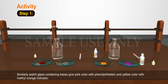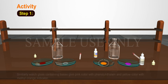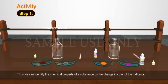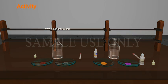Similarly, the watch glass containing bases gives pink colour with phenolphthalein and yellow colour with methyl orange indicator. Thus we can identify the chemical property of a substance by the change in colour of the indicator.